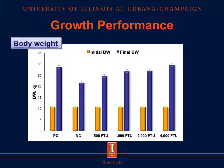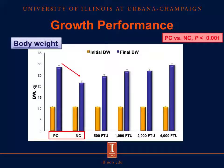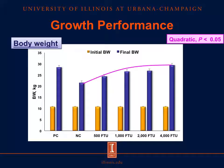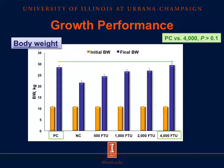I will start explaining the results of growth performance. All results follow the same pattern. In the x-axis, the six dietary treatments are represented: the positive control, the negative control, and the negative control plus 500, 1,000, 2,000, and 4,000 FTU. In the y-axis, the variable response is represented — in this case, body weight. The orange bar represents the initial body weight, and the blue bar represents the final body weight. There were no differences among treatments in initial body weight. However, there was a reduction in final body weight of pigs fed the negative control diet compared with pigs fed the positive control diet. The addition of phytase to the negative control diet increased quadratically the final body weight, so there were no differences between pigs fed the negative control diet plus 4,000 FTU and pigs fed the positive control diet.